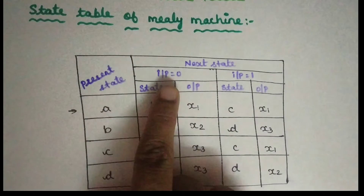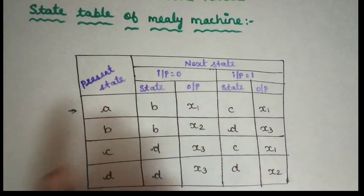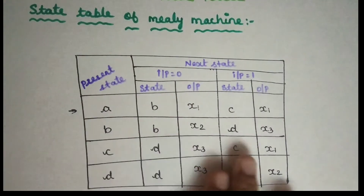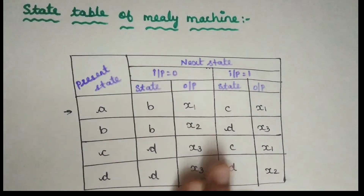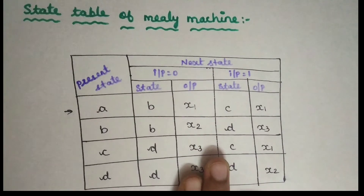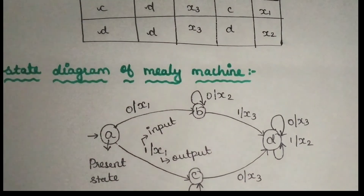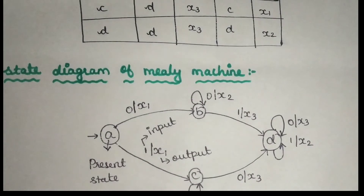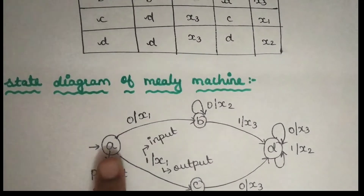If you look at each state in the state table, for each state and each input the machine transitions to another state and produces a corresponding output. That is the structure of the Mealy machine. Now if you look at the Mealy machine state diagram, it is the first step in understanding the machine.